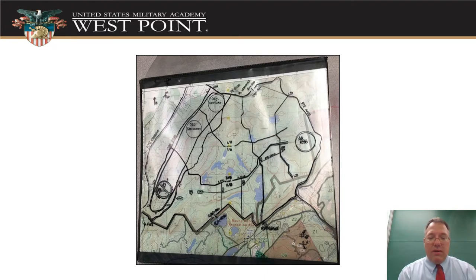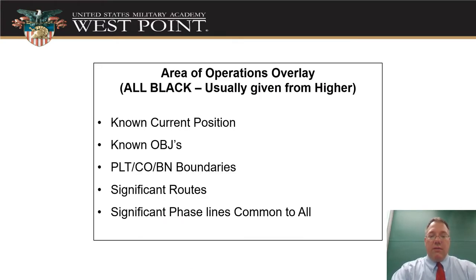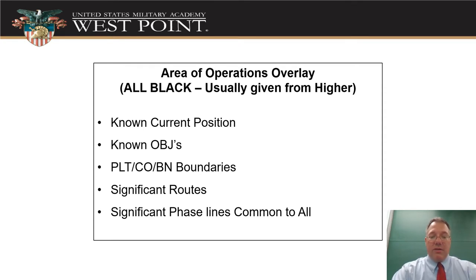This is just an example of what an area of operations overlay looks like — that's the kind of product you're trying to produce. Everything on it goes in black. It's very helpful that in a lot of ways your AO overlay comes from higher. At the platoon level, there's usually not much left for you to add to it. So: known current positions of things, known objectives, your platoon, company, or battalion boundaries — that's what defines the actual area of operations you can work inside of. Any significant routes, especially named routes that your company commander gave you, and any significant phase lines that are common to everybody.